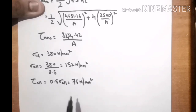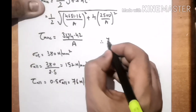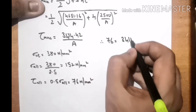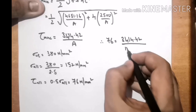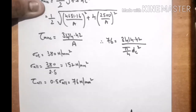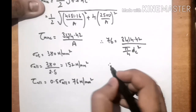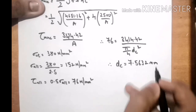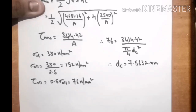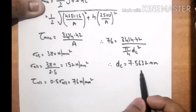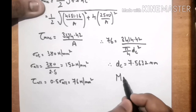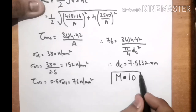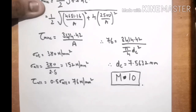Equating τ_allowable with τ_max: 76 = 3414.42 / (π/4 × dc²). Solving, dc = 7.5632 mm. Looking up the standard bolt table for the nearest value, the standard bolt size is M10. This completes the solution.